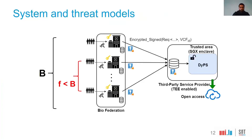Now let's discuss the system and threat models of DIPs in more detail. We assume a federation with B biocenters, where F — strictly smaller than B — biocenters might collude to attack the final results. Each biocenter sequences new people at a different pace. Before sharing their genomic data, they encrypt and sign the data before sending it to the enclave. In the enclave, the data is securely stored and decrypted only in the trusted area where DIPs runs its protocol and defines a safe batch of requests.